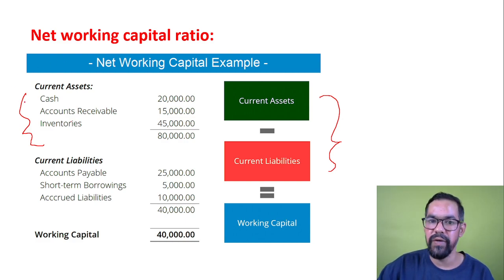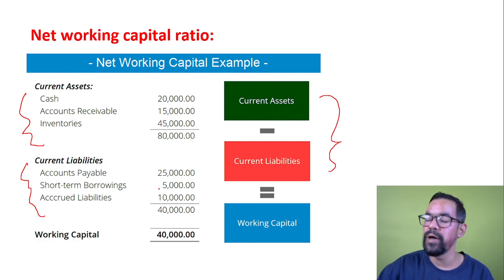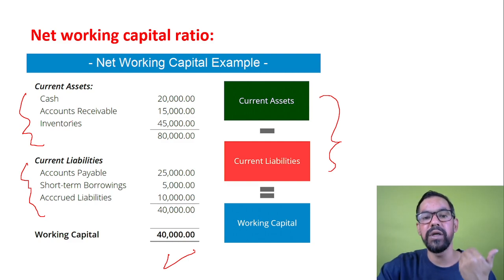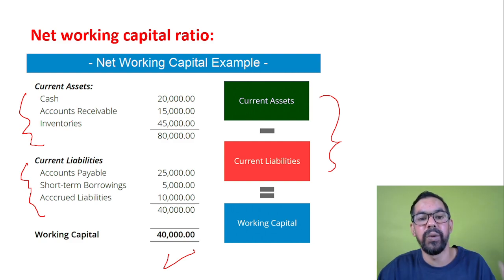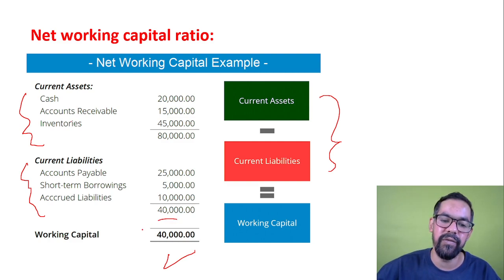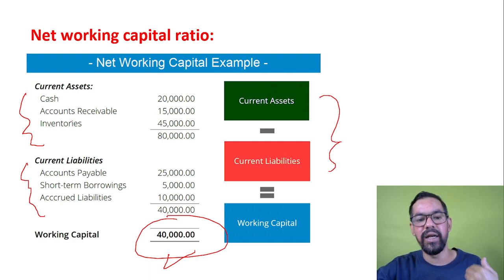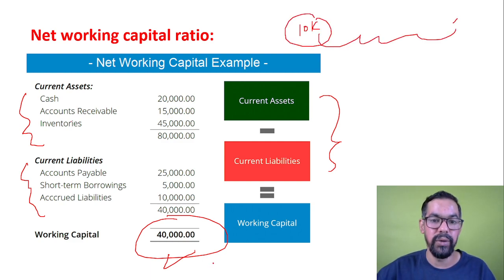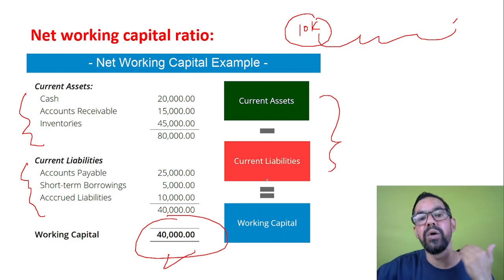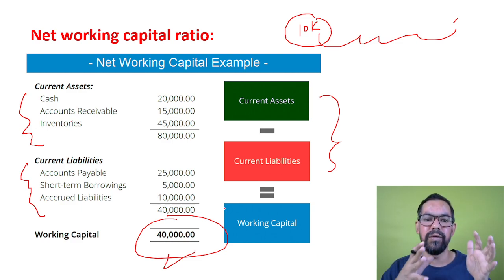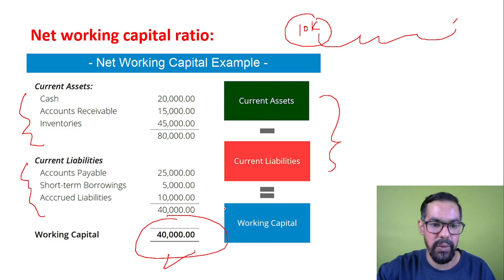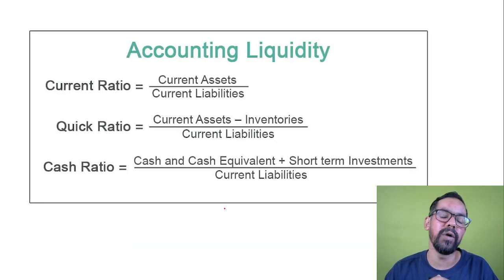In this ratio, inventories are included (unlike the quick ratio). For a case where current assets are 80,000 and current liabilities are 40,000: net working capital = 80,000 − 40,000 = 40,000 rupees. If monthly expenses are 10,000, the company can run for four months with this working capital. They can plan accordingly and work on increasing their revenue.